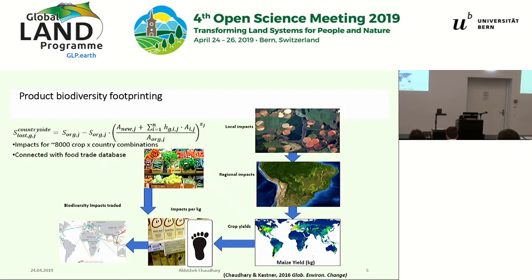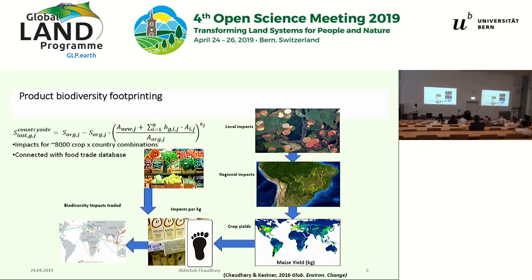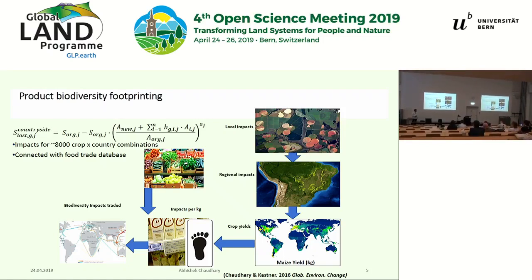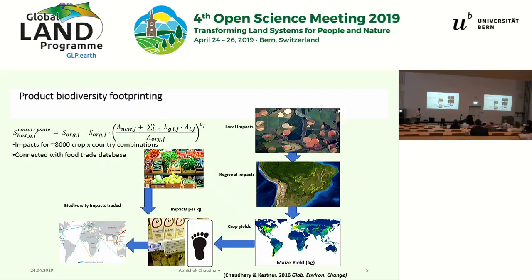Once we know how many species will go extinct because of agriculture, and we have global pixel-level maps of crop yield and area from colleagues like Ramankutty, we can calculate the biodiversity impact of wheat or soy production in Cerrado per kilogram. If we know how many kilograms the Netherlands is importing, we can calculate the species impact due to soy consumption in the Netherlands.